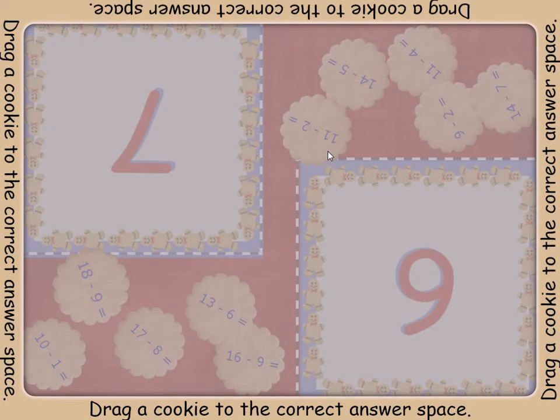Figure out the answer for each subtraction sentence. Drag the cookie with the subtraction sentence to the space with the same number as your answer for that question.